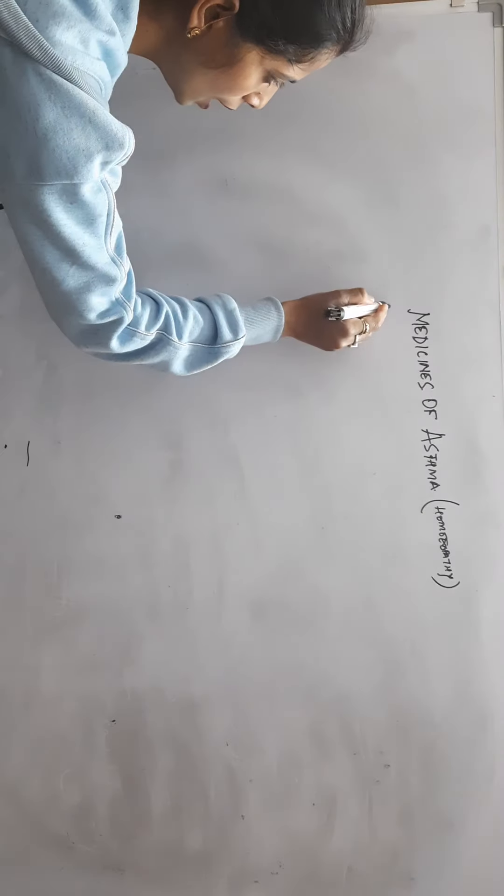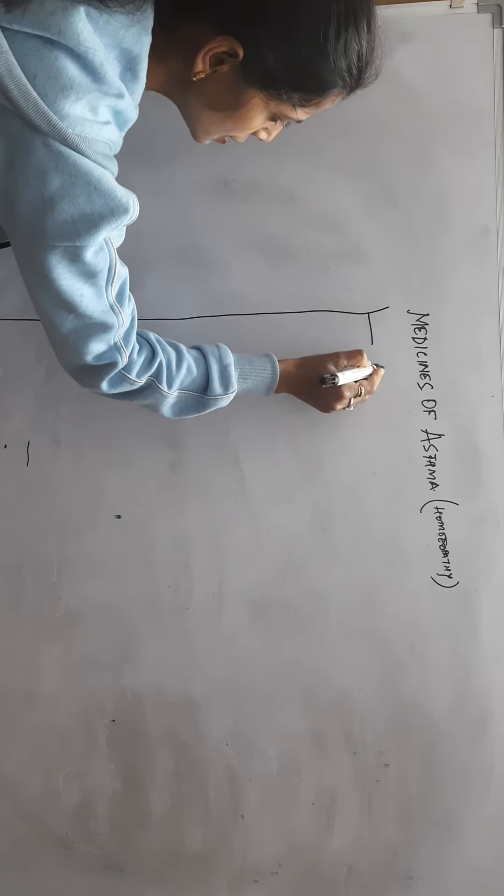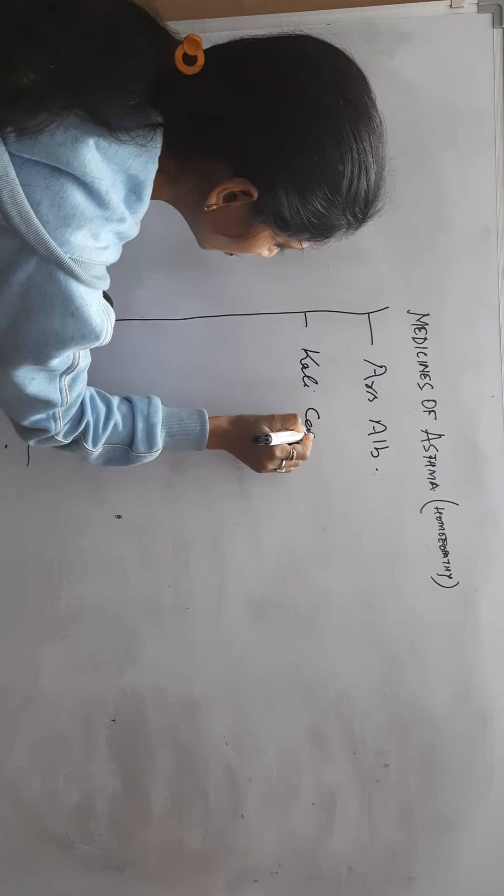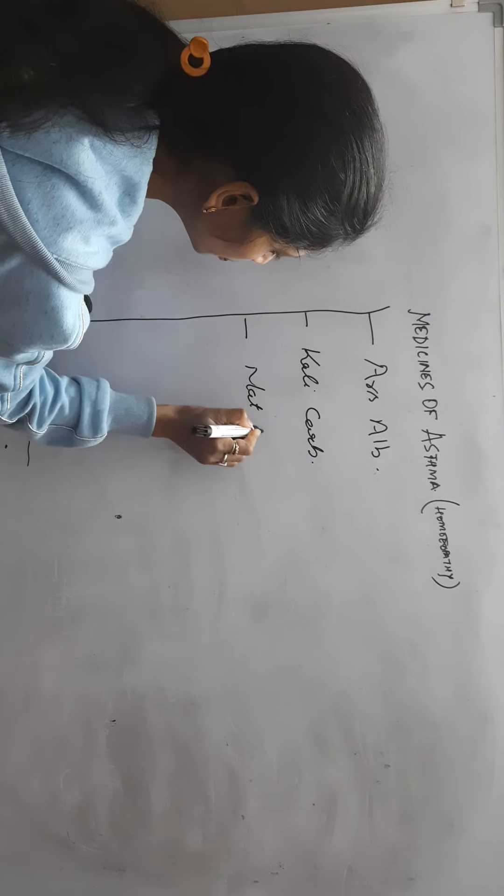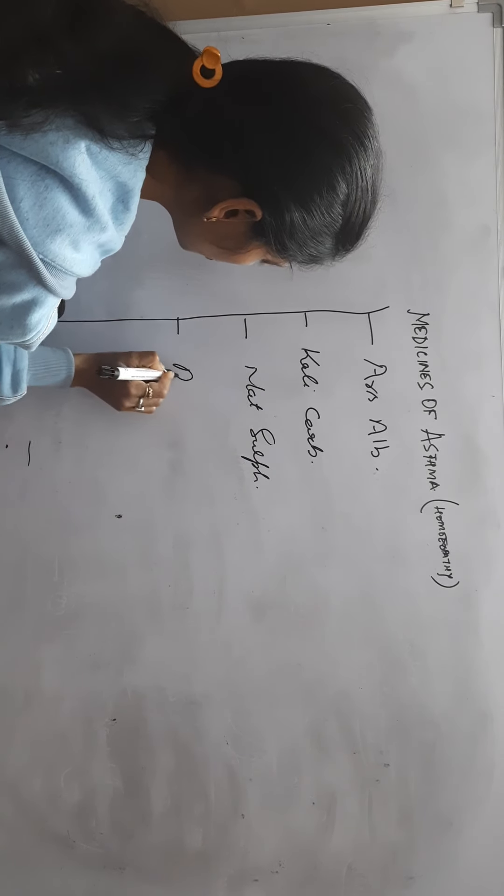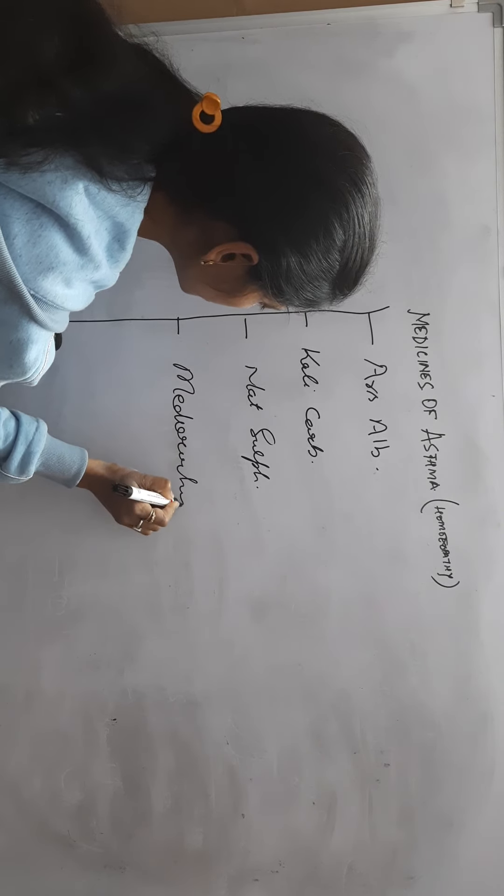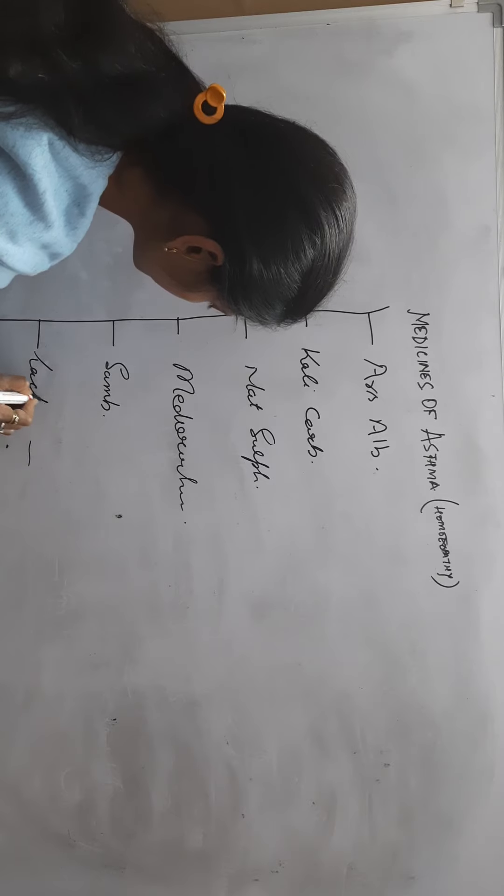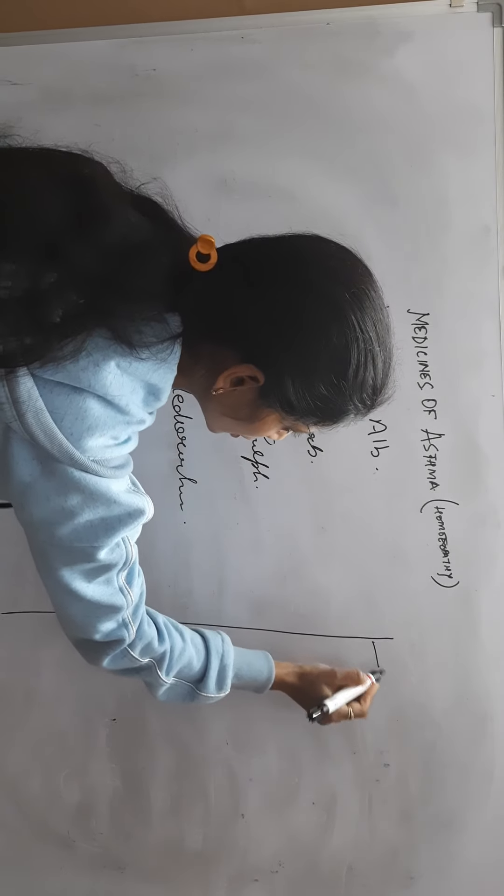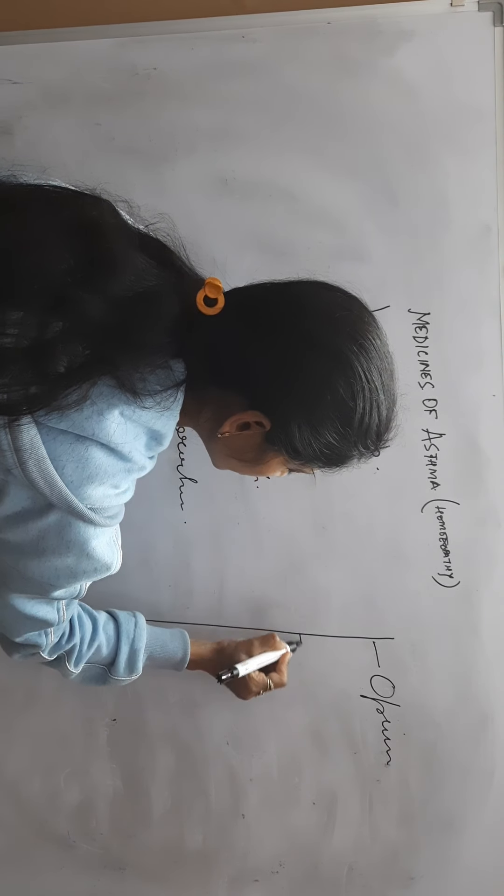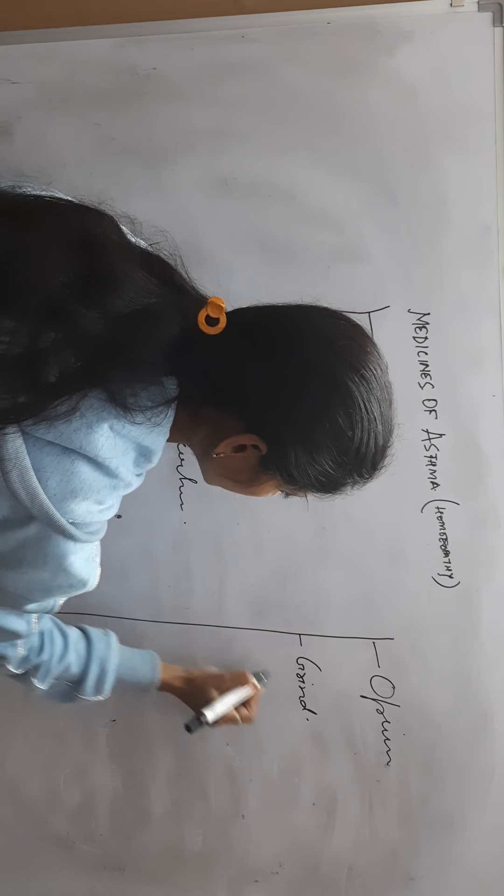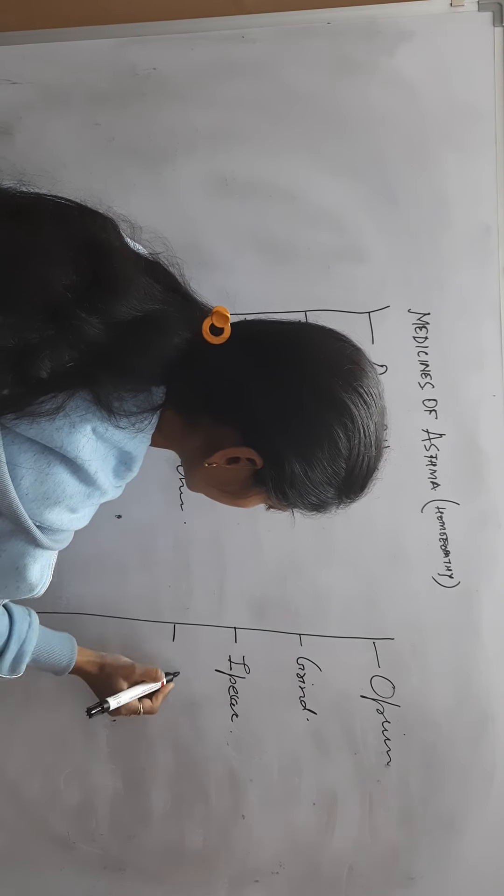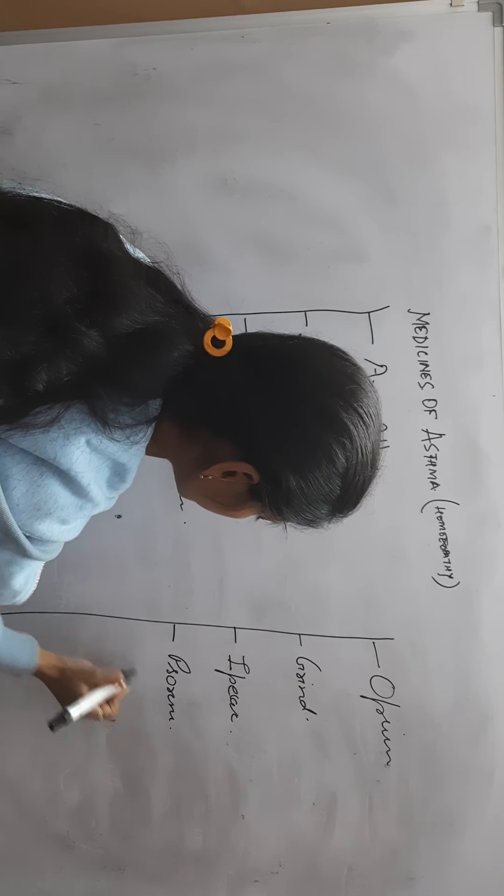First we start with Arsenic Album, Kali Carb, Natrum Sulf, Medorrhinum, Sambucus, Lachesis, Opium, Grindelia, Ipecac, Sanguinaria, and Sepia.